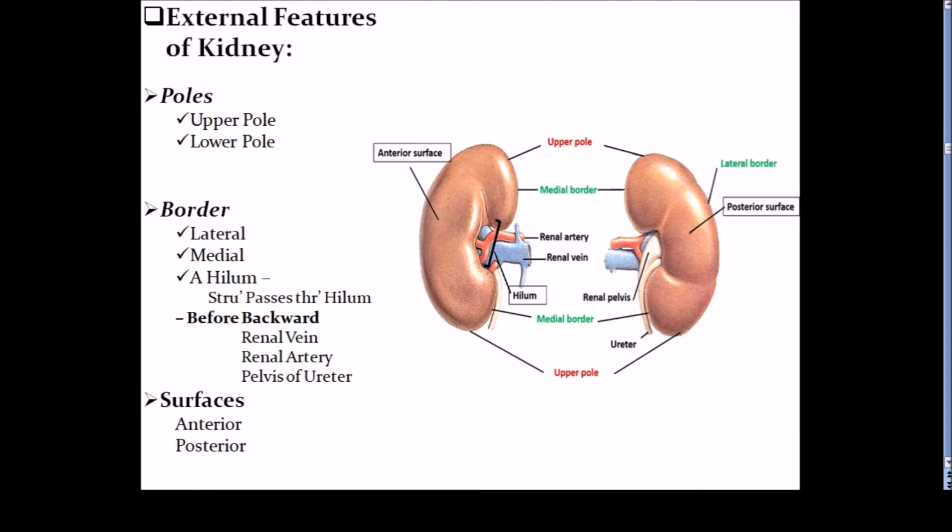The external features of kidney: kidney has two poles, two borders and two surfaces. First we discuss the poles. Kidney has upper pole and lower pole. The upper pole is thicker and more rounded than the lower pole and it is situated about 2.5 cm from the median plane opposite to the T12 vertebrae. The lower pole is pointed, it goes downward and laterally and it is 7.5 cm from the median plane at the level of L3 vertebrae.